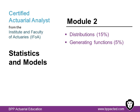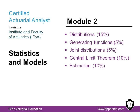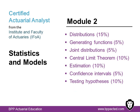Moment generating functions, cumulant generating functions and their uses to evaluate moments. The concepts of independence, jointly distributed random variables and conditional distributions, and the use of generating functions to establish the distribution of linear combinations of independent random variables. The central limit theorem and the concepts of random sampling, statistical inference and the sampling distribution — for example, using the distributions of sample means and sample variances to find probabilities. Estimation: you will describe and apply the method of moments and maximum likelihood to estimate an unknown parameter, and define and calculate the properties of estimators. Confidence intervals for unknown parameters, calculated for both one and two samples.